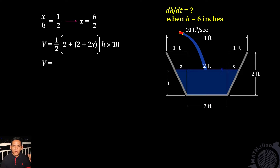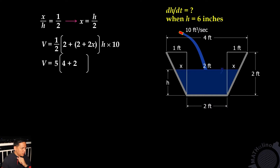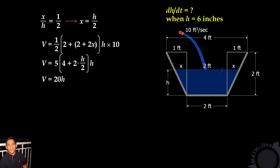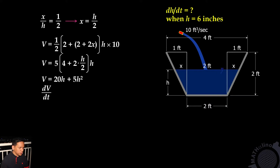The volume of the water inside is equal to 5 times 4 plus 2x, where x is equal to h over 2, times h. Simplifying the equation, we get 20h plus 5h squared. Now let us differentiate this equation with respect to time. We have dV/dt is equal to 20 plus 10h times dh/dt.